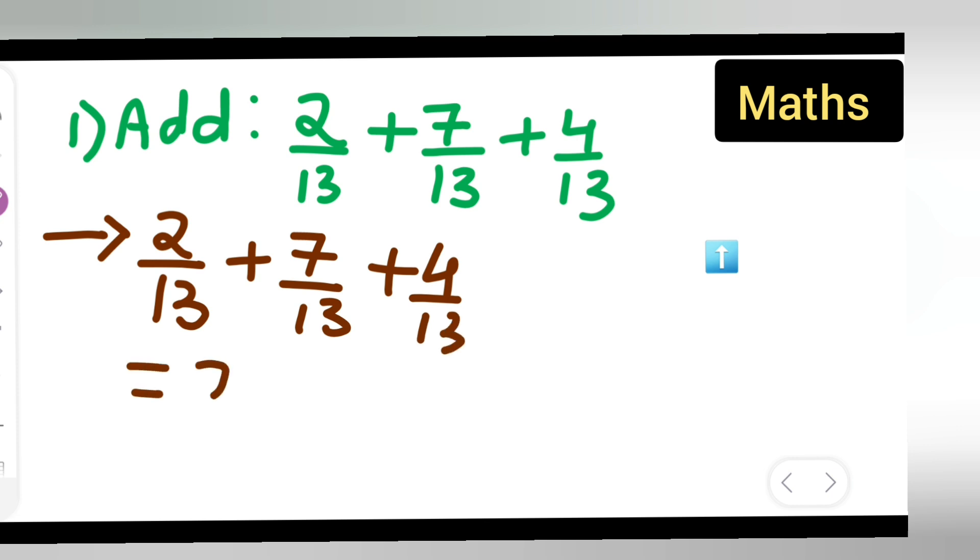Add all the numerators: 2 + 7 + 14 upon 13. Now add these numbers: 14 + 2 = 16, and 16 + 7 = 23.